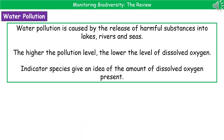The second key area of pollution to consider is water pollution. This is generally caused by the release of some kind of harmful substance into a body of water, whether it be a lake, a river, or the sea. The higher the pollution level, the lower the level of dissolved oxygen, which means there will be fewer organisms able to survive. We can use indicator species to give an idea of the amount of dissolved oxygen present and therefore the amount of pollution in that water.